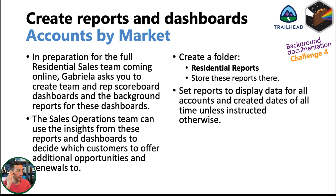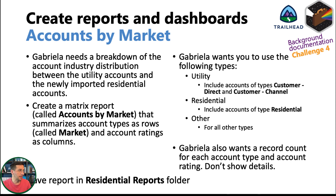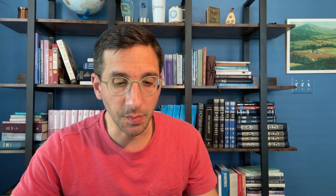For accounts by market, you're going to create a folder called 'Residential Reports' and store the reports there. Set reports to display data for all accounts and created dates for all time unless instructed otherwise. After you complete each report, go ahead and click 'Check Challenge.' The Superbadge checks for the reports in the order listed, so if you have the first one it will say the second is missing, and so on. I like doing that to make sure I'm not doing four reports and then finding out I messed up on one.